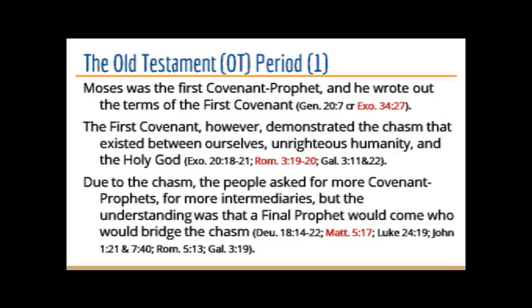Because of that chasm between God and man, the people asked for more covenant prophets. Moses was given to reveal the initial issue — the righteousness of God compared to the unrighteousness of man. They said, 'Let us not see this great fire anymore; instead, have God send us someone like you — someone who can intercede for us, a mediator, another prophet.' And God acquiesced their request, saying that what they asked for was good.